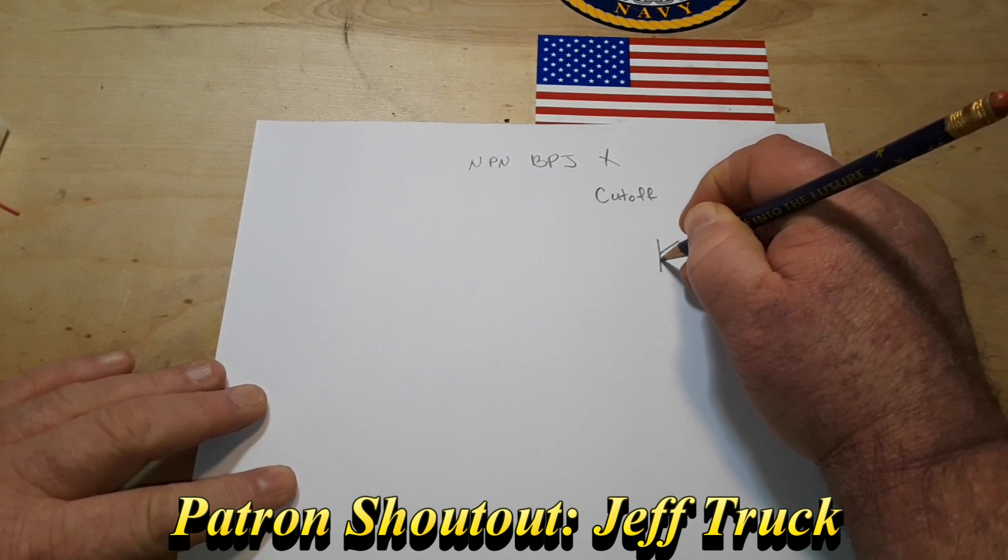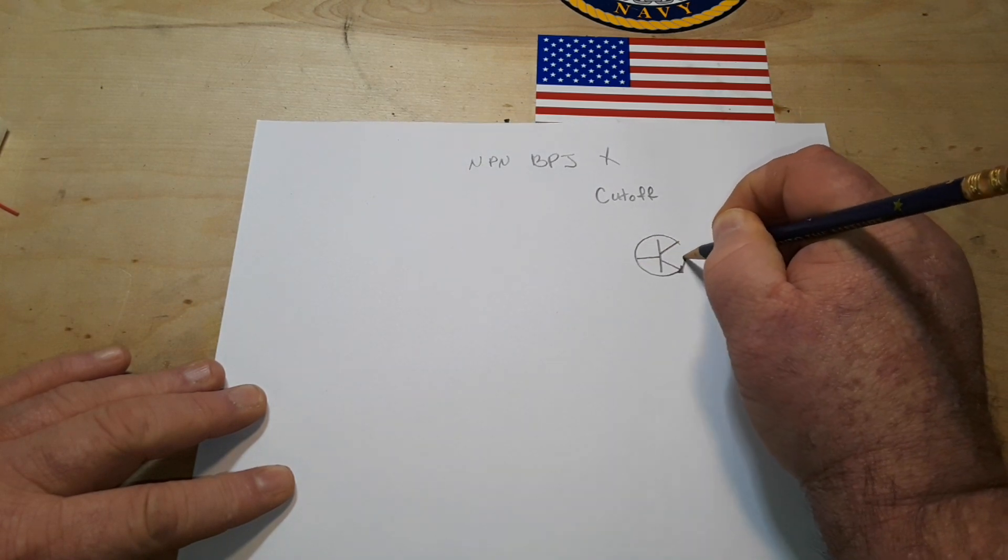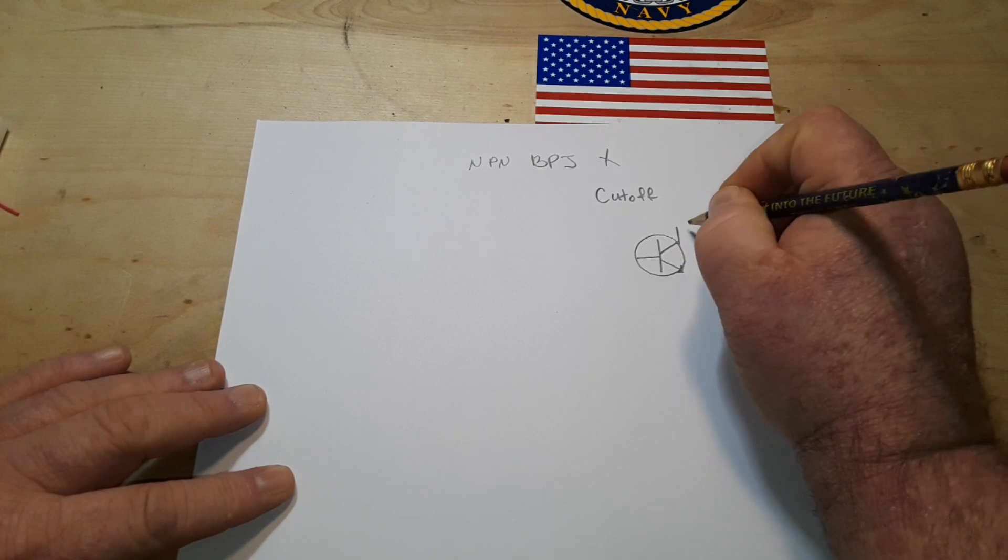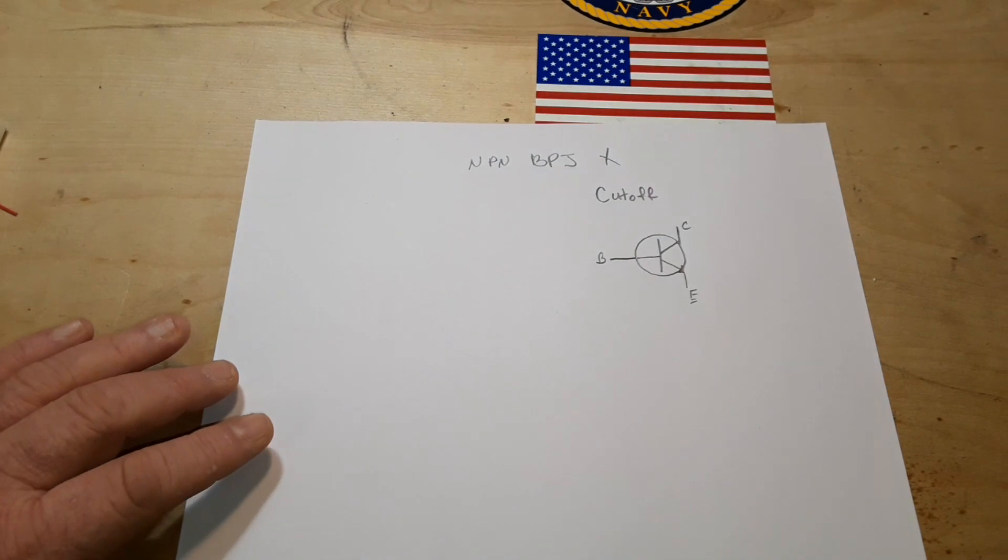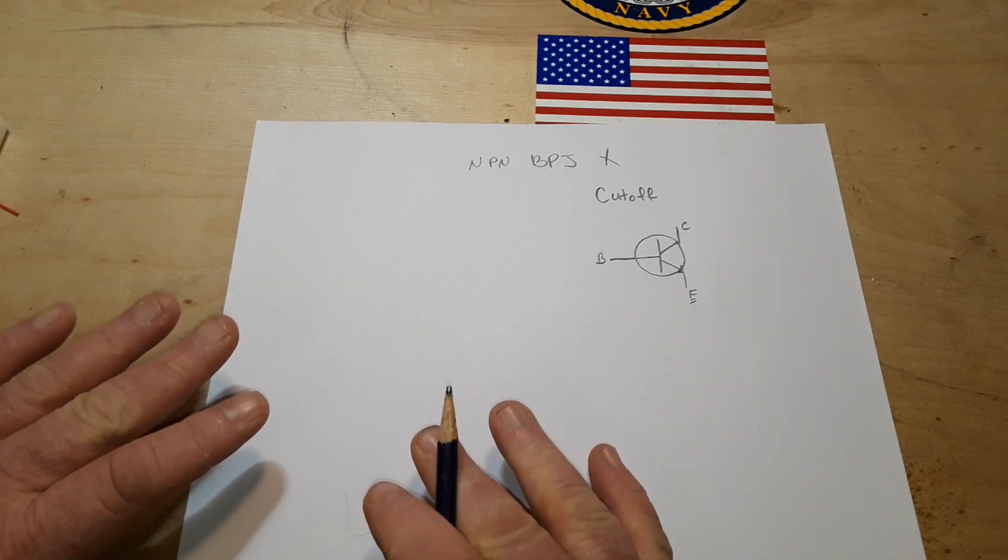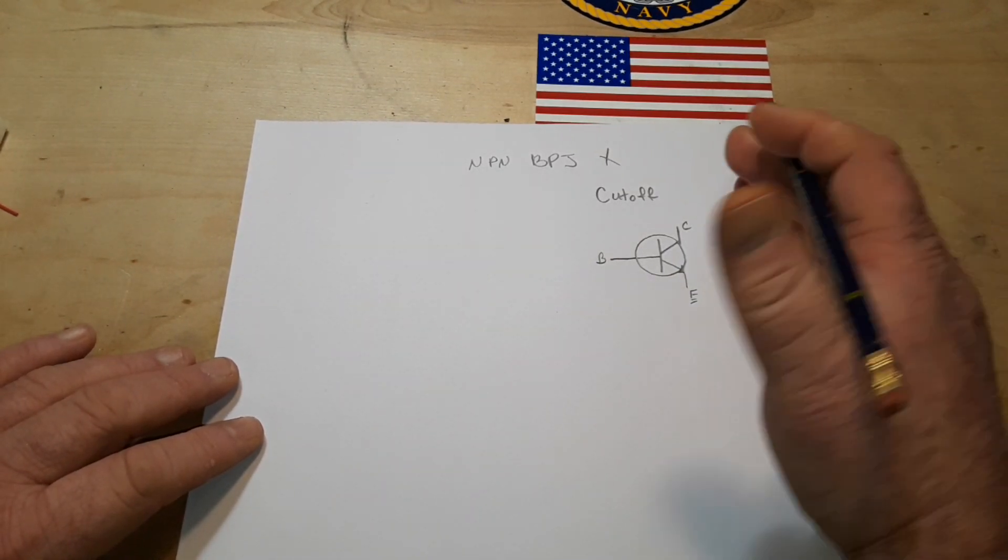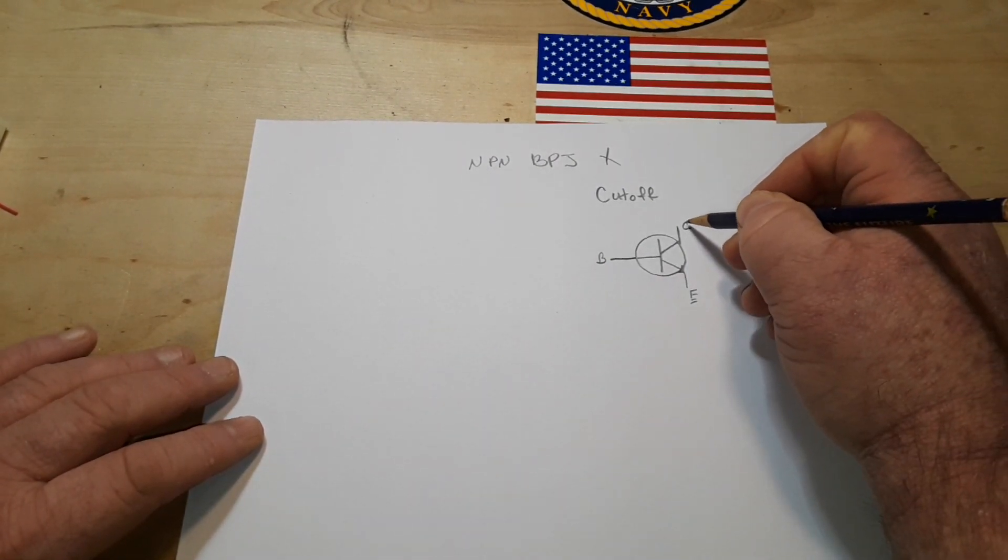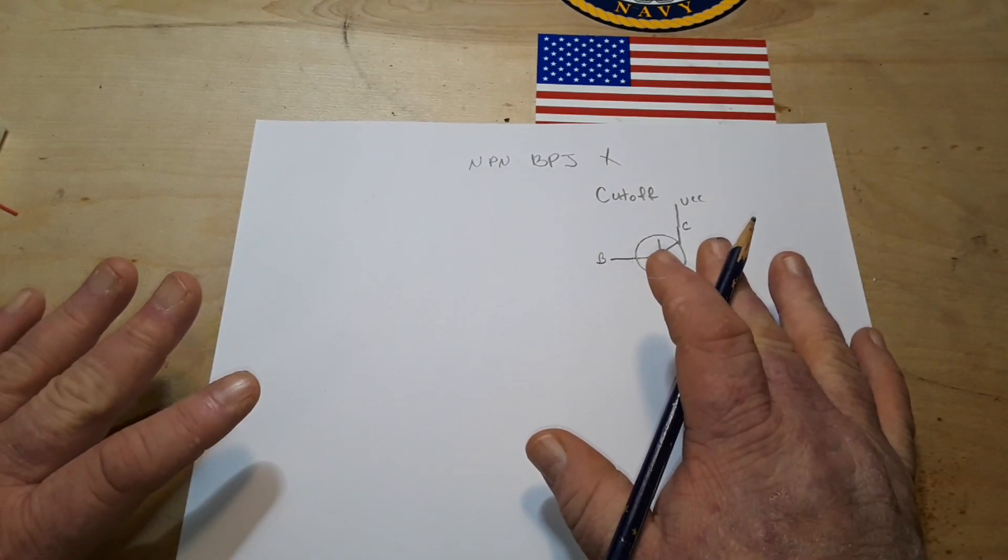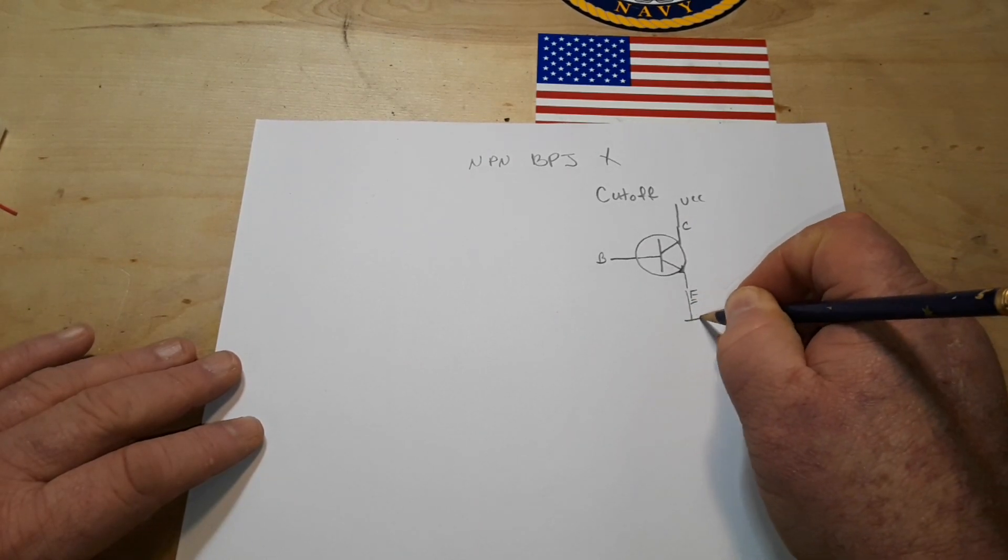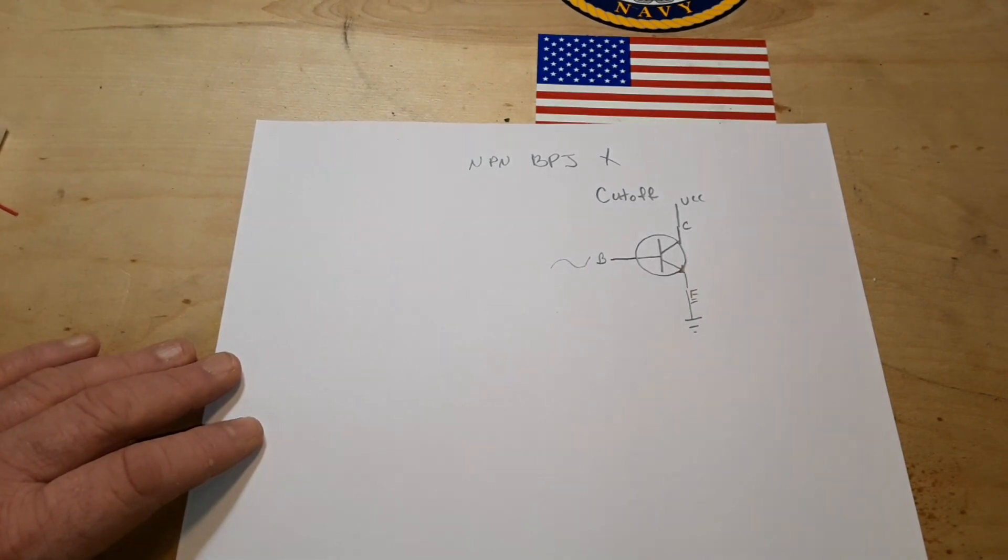So we can take just about any fast switching low current NPN transistor and we have our collector, our emitter, and our base. If you have absolutely no understanding of transistors whatsoever, I'm just going to give you a simple overview. The collector generally connects to VCC through whatever it is we're trying to power. The emitter connects to ground and the base is where we're going to get a signal.